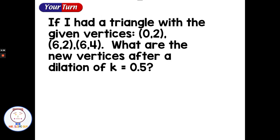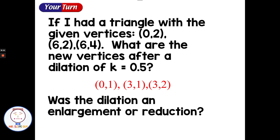Pause the video here, try this one on your own, and then come back and check. If we had a triangle with given vertices of (0, 2), (6, 2), (6, 4), what are the new vertices after a dilation of K equals 0.5? I can take each of those points and multiply by 0.5, giving me half of each. Half of 0 is 0, half of 2 is 1, half of 6 is 3, half of 2 is 1, half of 6 is 3, and half of 4 is 2. Was this dilation an enlargement or a reduction? The triangle definitely got smaller — multiplying by a number between 0 and 1 gives us a reduction.